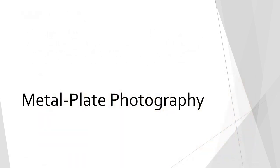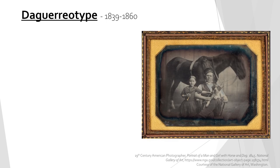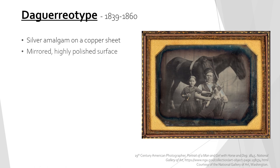We will begin with metal plate photography. The first widely available photographs, daguerreotypes, were created from 1839 to 1860. They consist of a silver amalgam on a copper sheet and are known for their mirrored, highly polished surface. However, they tarnish very easily, which can be seen along the edges of the example on the right.